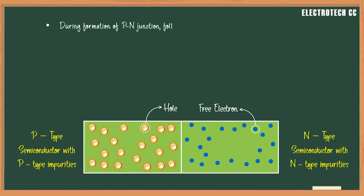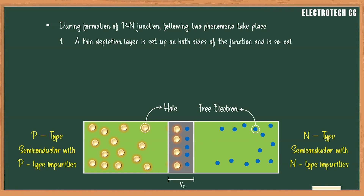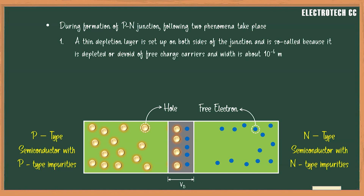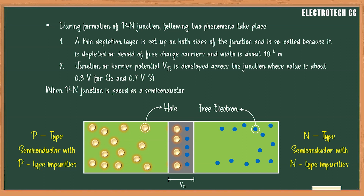During the formation of a PN junction, two phenomena take place. First, a depletion layer is set up on both sides of the junction, and the width of the depletion layer is approximately one micrometer. Second, a junction or barrier potential VB is developed across the junction, whose value is about 0.3V for germanium and 0.7V for silicon.